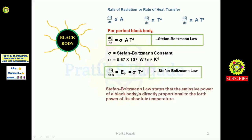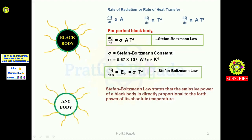Stefan-Boltzmann law states that the emissive power of a black body is directly proportional to the fourth power of its absolute temperature. As you can see, E_b is directly proportional to T to the power 4.